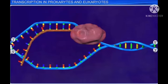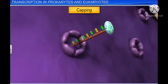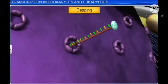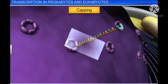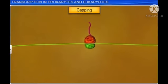The first process is capping, which involves an unusual nucleotide called methylguanosine triphosphate being added to the 5' end of the HnRNA. Capping helps mRNA to bind with small ribosomal subunits during protein synthesis.